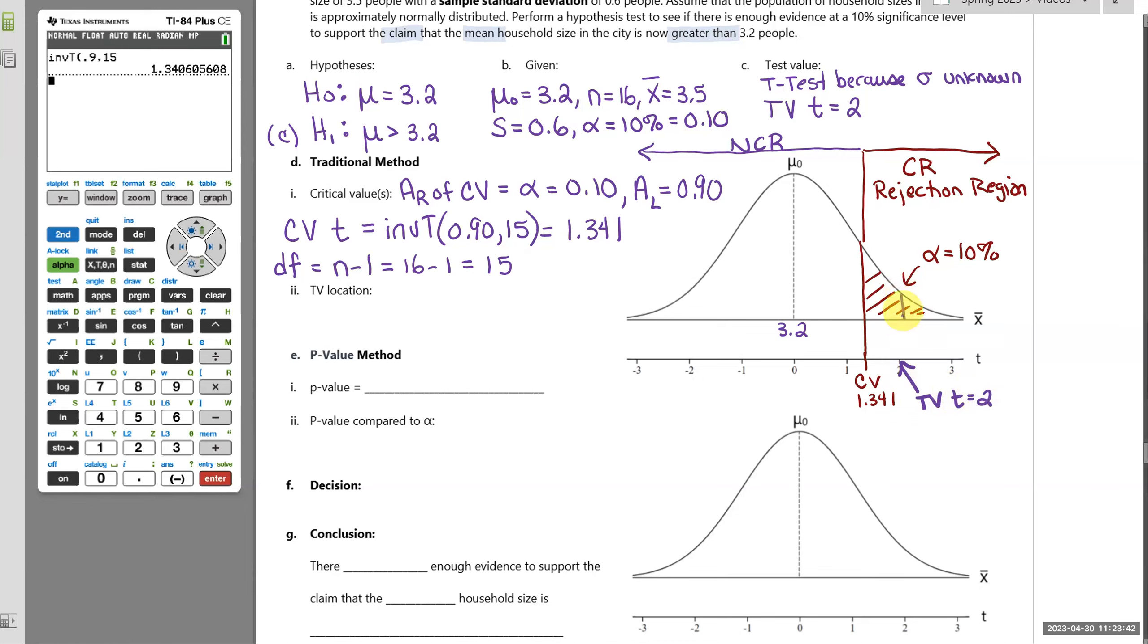So my test value falls in the critical region. And when our test value is in the critical region, so in this case, far to the right, and coming down to the decision, anytime your test value is in the critical region, you reject H naught.